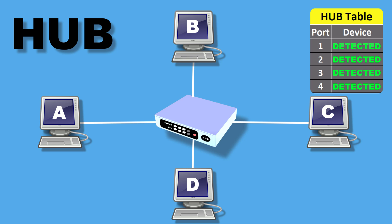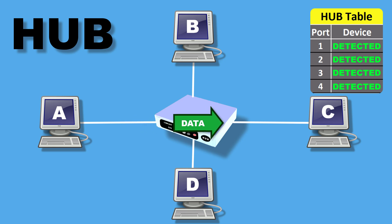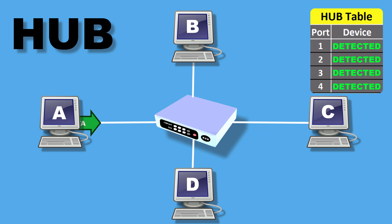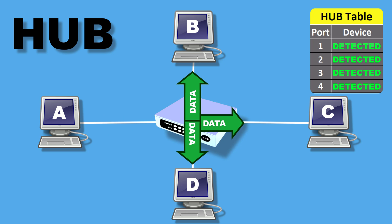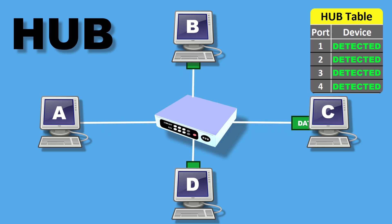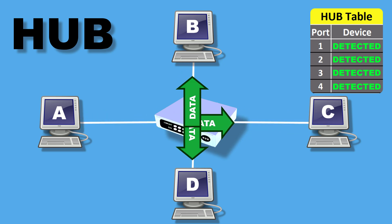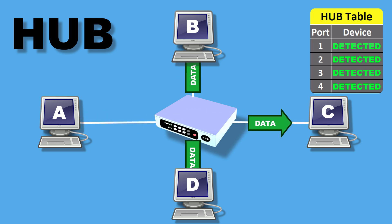Let's see how it works. Whenever a PC sends data to a hub, the hub broadcasts or repeats that data to all of its ports except the sending one. Data comes in and data clones come out on all interfaces of the hub and are sent to all connected devices.